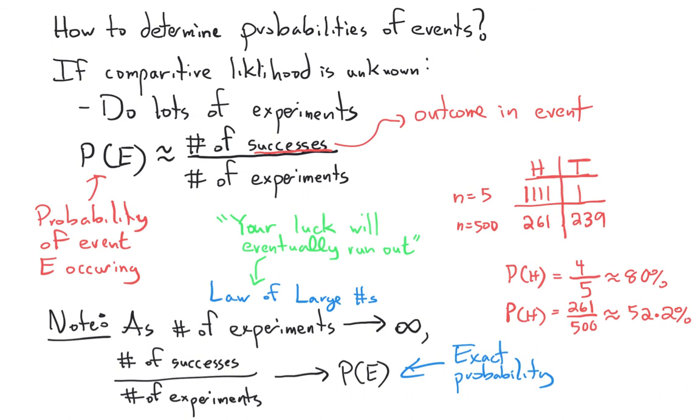That's what the law of large numbers says. If you have good luck or bad luck, if you do an experiment enough, the probability will just approach what it's supposed to as you do more and more experiments.